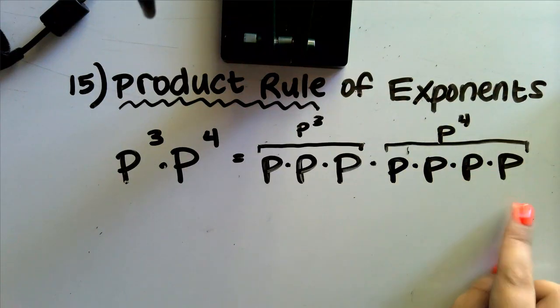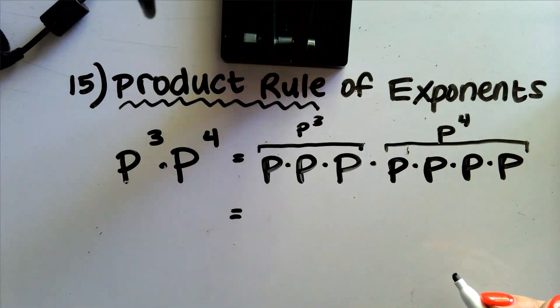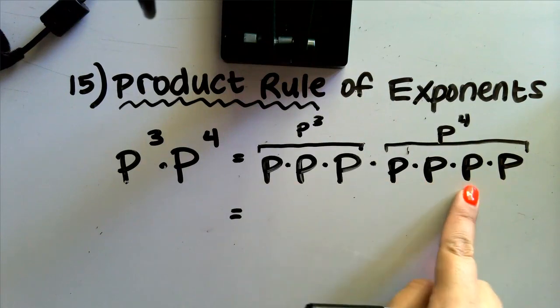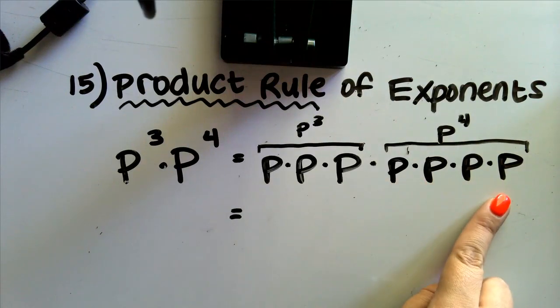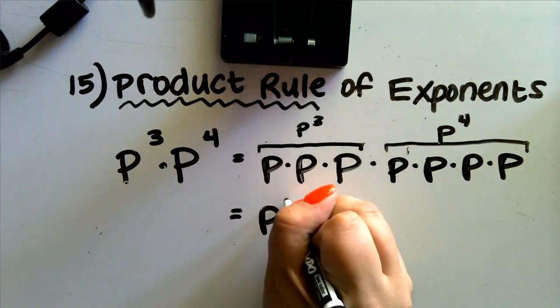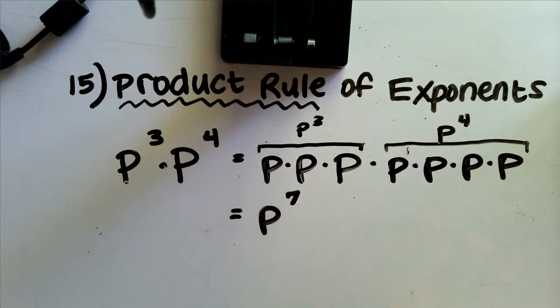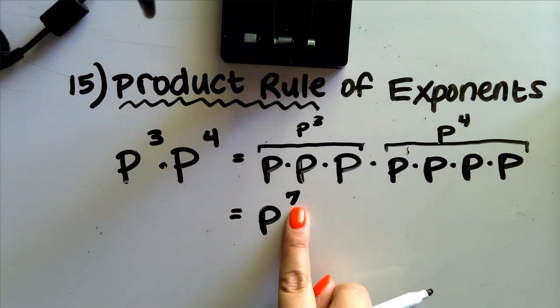Okay, let's count them up now. We have one, two, three, four, five, six, seven. We have seven p's multiplied together. In other words, we can say that p to the third times p to the fourth is equal to p to the seventh.